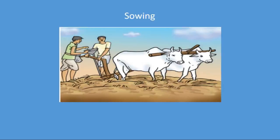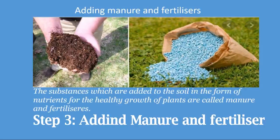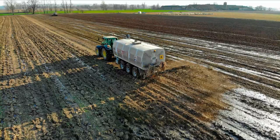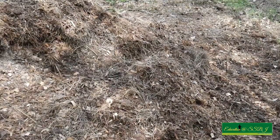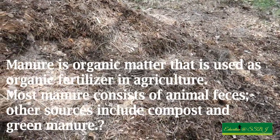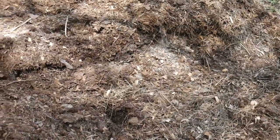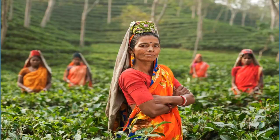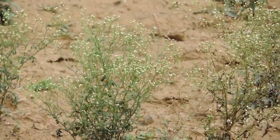Once you sow the seeds, the next step is to add manure or fertilizer. The substances added to the soil in the form of nutrients for the healthy growth of plants are called manures and fertilizers. Manures are homemade, while fertilizers are factory-made. But both provide nutrients and help the crop grow faster, because on the same soil a farmer grows crop after crop, which reduces the nutrients present in the soil.